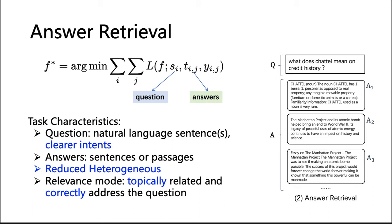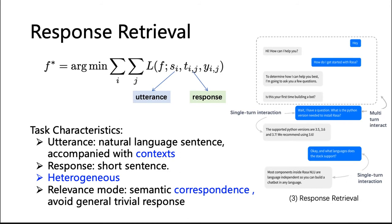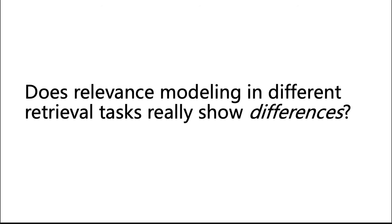The relevance modeling for answer retrieval requires the answer not only to be topically related to, but also to correctly address the question. Finally, response retrieval is also homogeneous in form, as both the utterance and response are often short sentences. Moreover, response retrieval often has a context accompanying each utterance, and relevance has a broad definition in terms of semantic correspondence, making it critical to avoid generic retrieval responses. We can see that different text-based retrieval tasks show distinct requirements in relevance modeling.